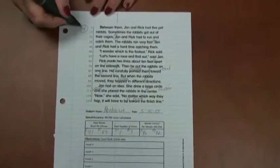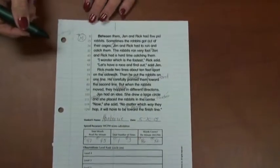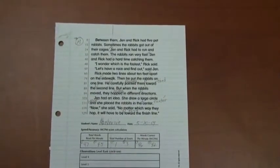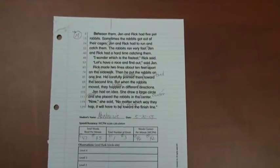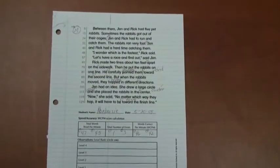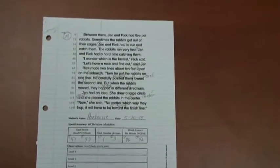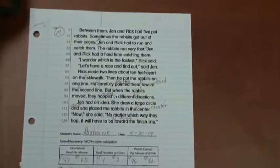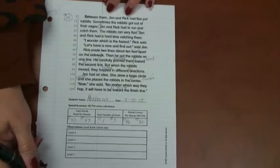So let's listen to this first grader. This is McKenzie. I'm seven years old, and I'm in first grade, and I'm reading a story, and the title is Between Them. Jen and Rick had five pet rabbits. Sometimes the rabbits got out of their cages.